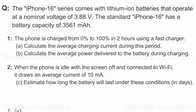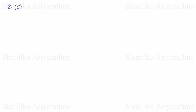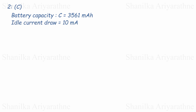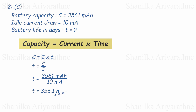Now let's move on to Part C. We're estimating how long the battery will last when the phone is idle — screen off, connected to Wi-Fi, drawing just 10 milliamps — and we'll express the answer in days. Battery capacity is 3,561 milliamp hours, and idle current draw is 10 milliamps. Using the formula: time equals capacity divided by current, we get 356.1 hours. Dividing by 24, we get 14.84 days. So in this low-power idle mode, the iPhone 16 battery would last about 14.84 days.